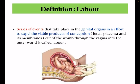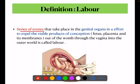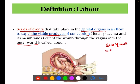So first, what is the definition of labor? Labor can be defined as a series of events that take place in the genital organs of a female in an effort to expel the viable products of conception out of the womb through the vagina into the outer world — this is called labor.